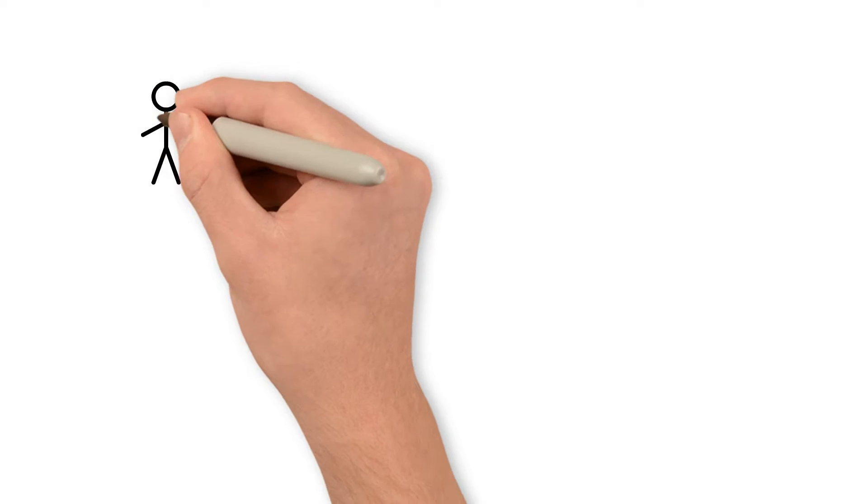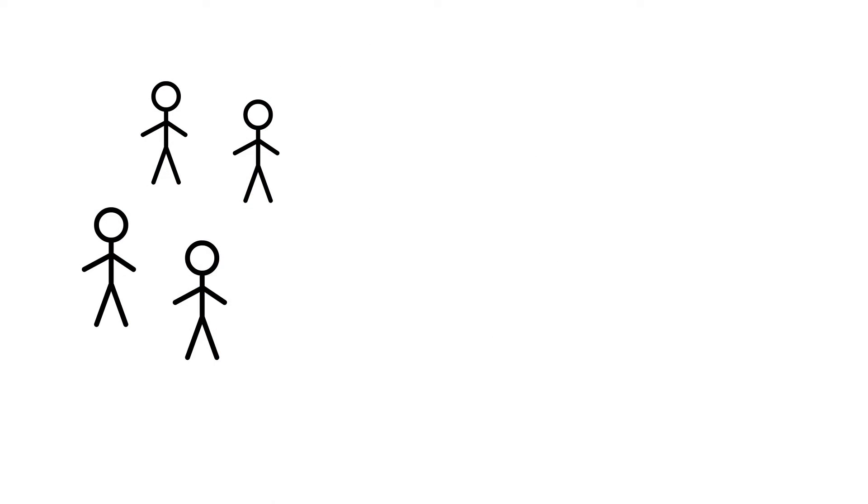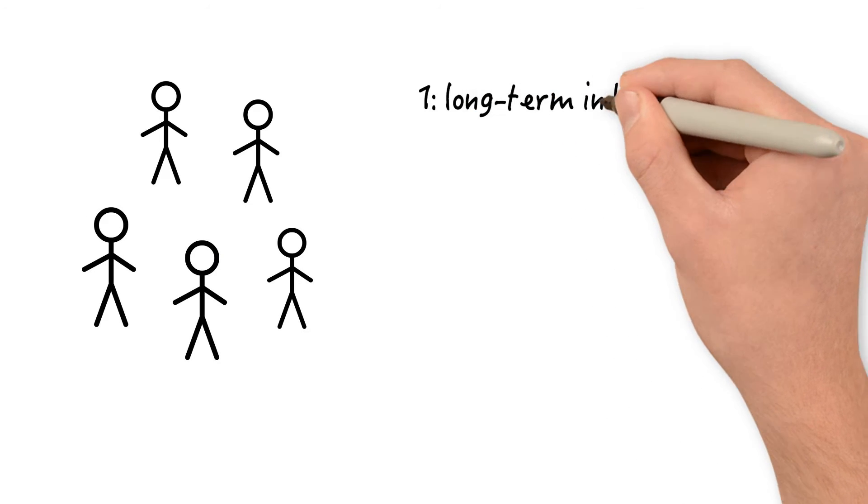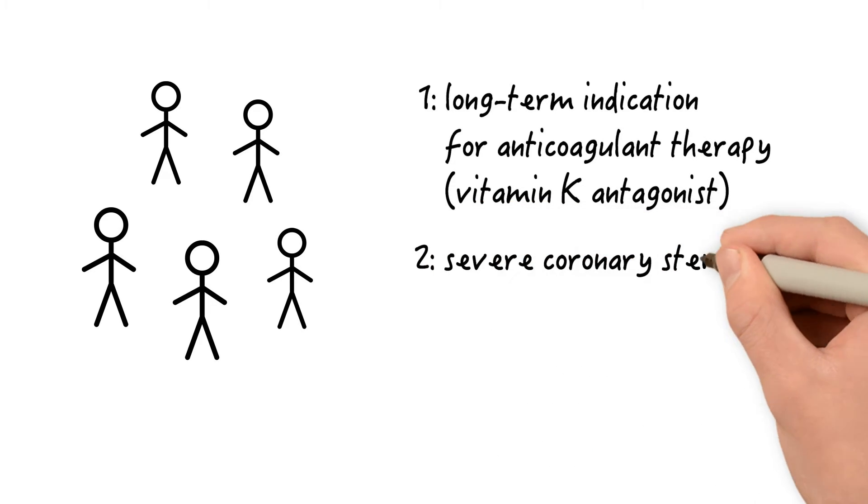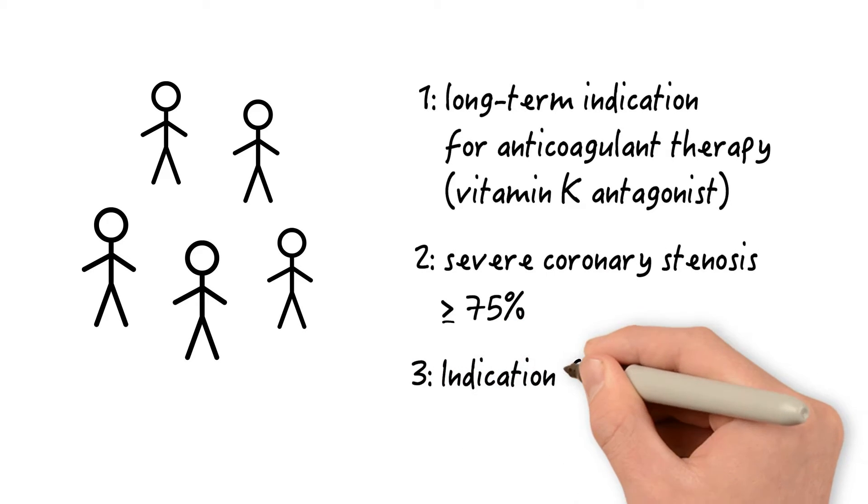The included patients had to meet three criteria. They had to have a long-term indication for anticoagulation therapy with the vitamin K antagonist. They had to have a severe coronary stenosis of at least 75% and they had to have an indication for percutaneous coronary intervention or PCI.